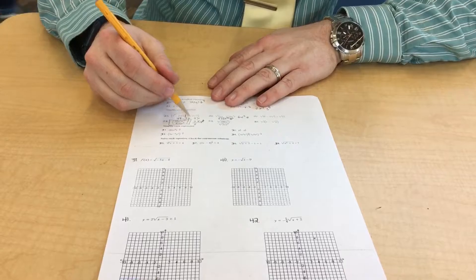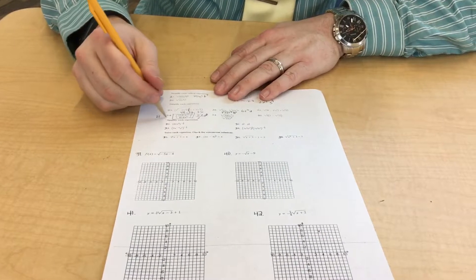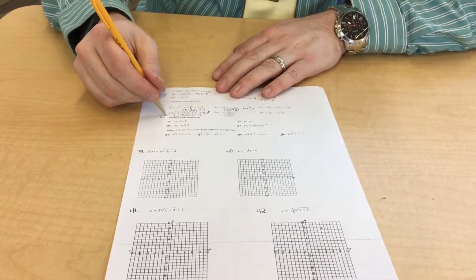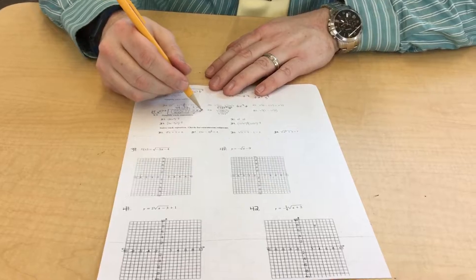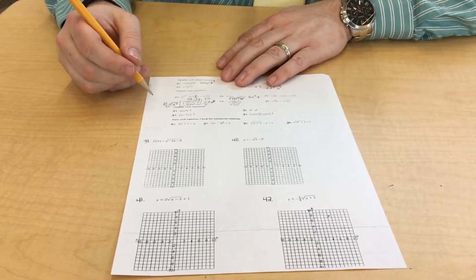And then y to the 10th over y squared is going to be y to the 8th. And then the 4th root of that is y squared. Then you take that to the 3rd. 2 to the 3rd is 8. 3 to the 3rd is 27. And then you've got x to the 3rd. That's x to the 3rd. And then y squared to the 3rd is y to the 6th power. I can't reduce that fraction.